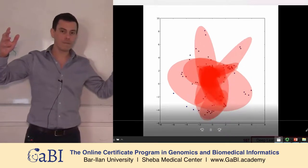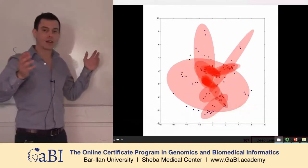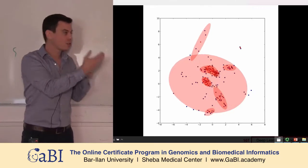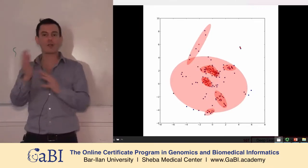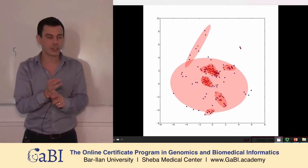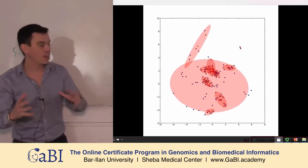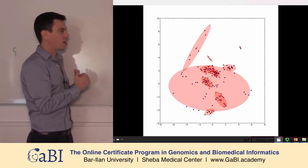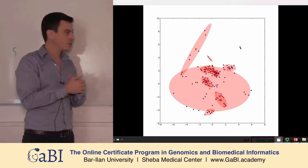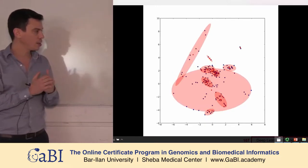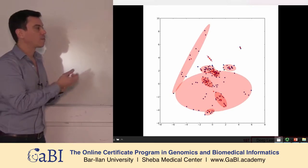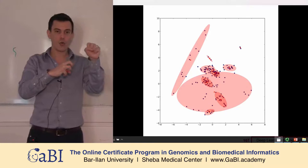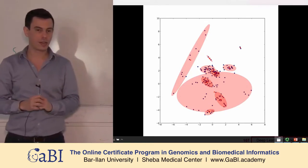We begin with something random — random Gaussians. We assign data points to the proper Gaussians, then we calculate again the standard deviations and the modes. When we calculate it again, we can change the attribution of each patient to the closest Gaussian. As time goes by, we end up with these Gaussians.